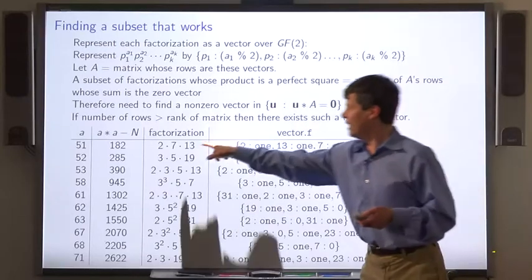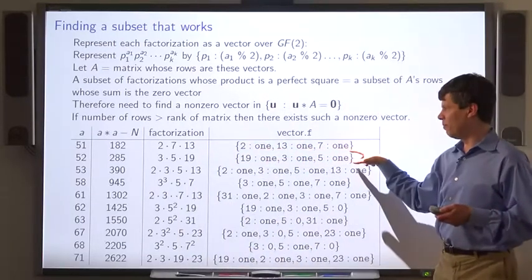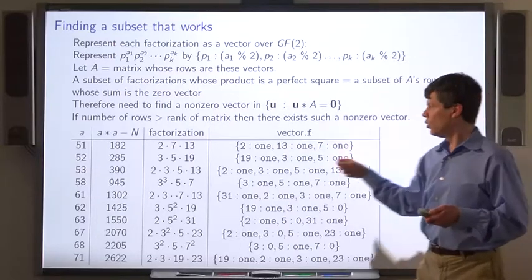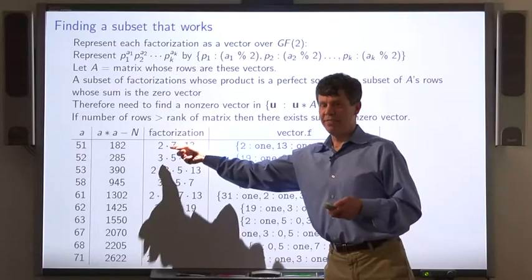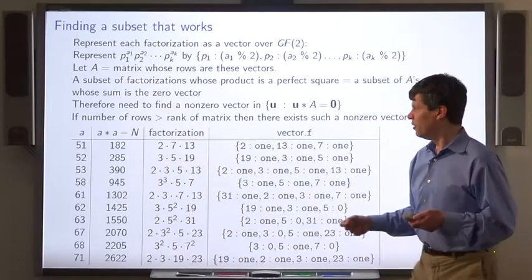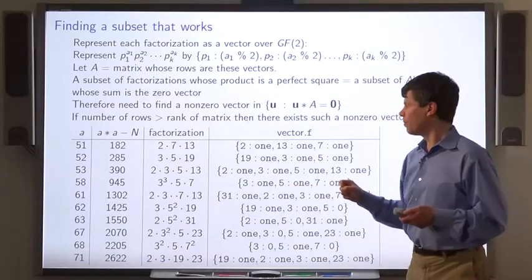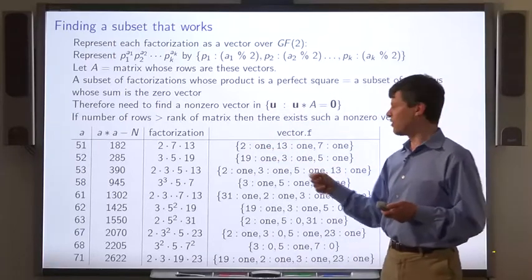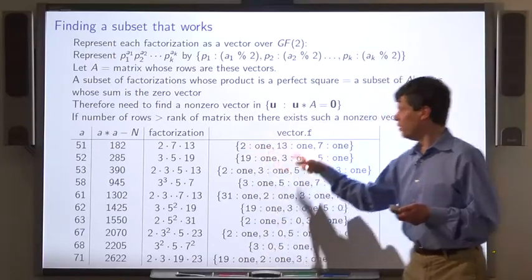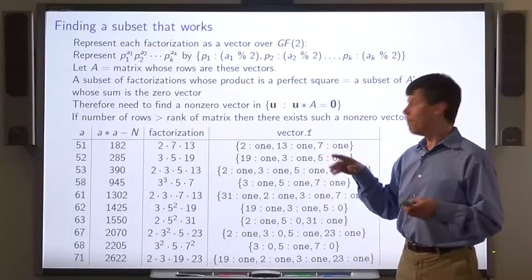So we represent each factorization by a GF2 vector where the values depend on whether the exponents in the factorization are even or odd. So the factorization 2, 7, 13, all the exponents are 1, therefore odd. So we represent it by the vector where 2 maps to 1, 13 maps to 1, 7 maps to 1 and all the other primes map to 0.